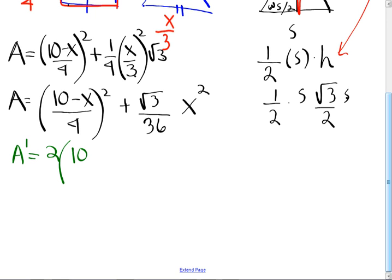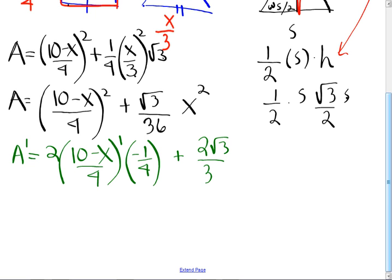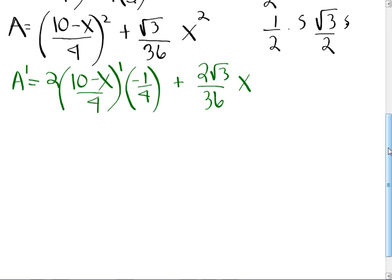It's 2, 10 minus X over 4 to the first power, times negative 1 fourth. Did everybody see that? Easy to miss the 4. Oh, but is it negative 1 fourth? Yeah, that's right. I almost did it wrong. Plus, this is easy, 2 square root of 3 over 36 X. Now, if you're an engineer in science class, you probably change all that to decimals, but you have to carry all the decimals with you. So, I'd rather leave it exact. Playing more math in a minute. Okay. We are going to solve for X, but let's go ahead and simplify this.